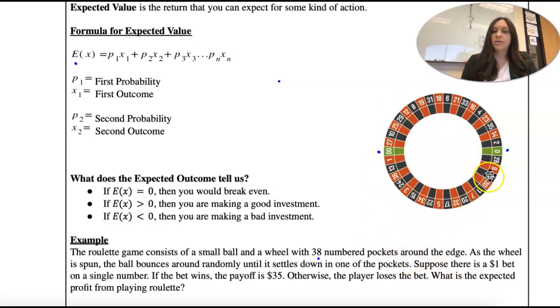As the wheel is spun, the ball bounces around randomly until it settles into one of the pockets. Okay, so a pocket is right here. That's where the ball would go. It's a number.